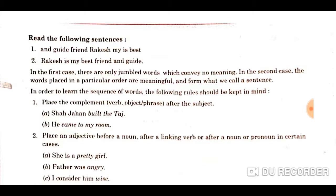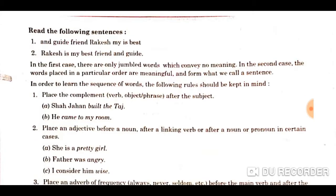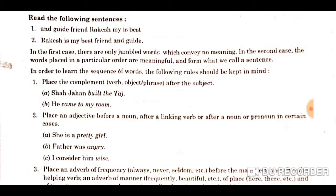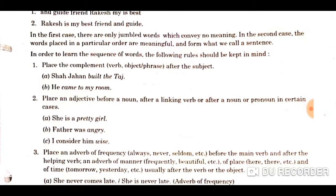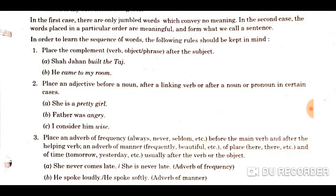The first rule I want to explain: place the complement after the subject. That is, in any sentence, first you have to choose the subject, and then after that place the complement — whether it is a verb, object, phrase, or whatever the complement is. For example: 'Shah Jahan built the Taj.' Here 'Shah Jahan' is the subject, 'built' is the verb, and 'the Taj' is the object.